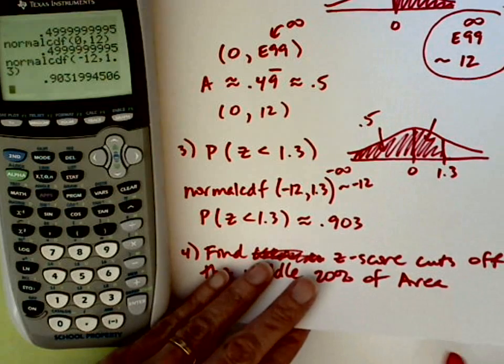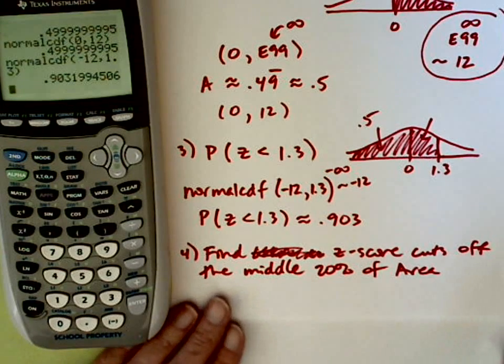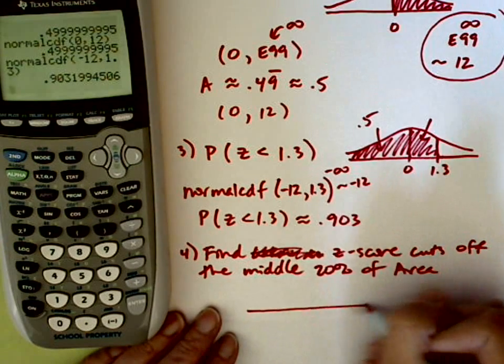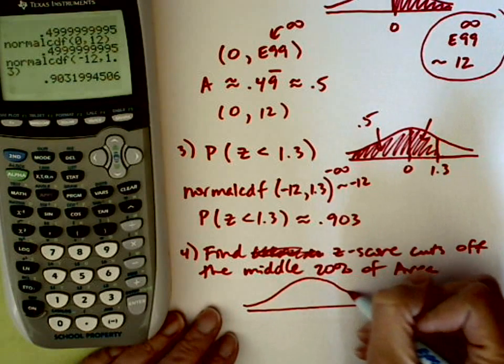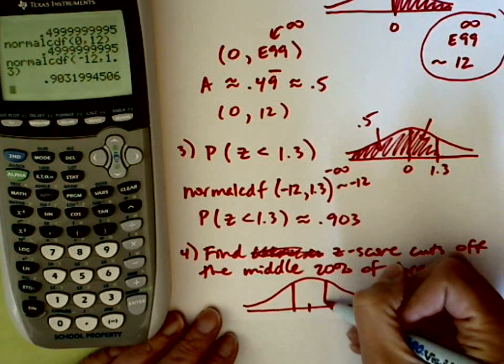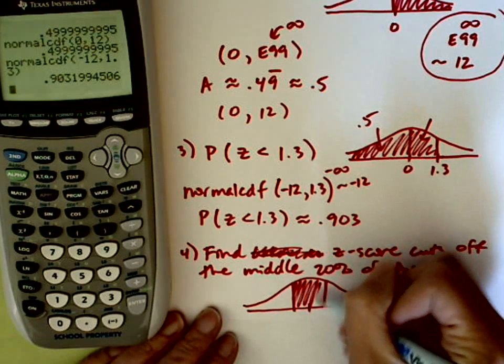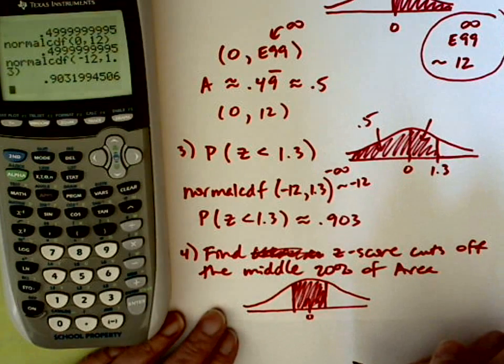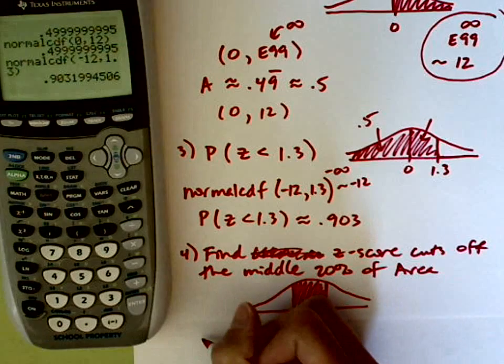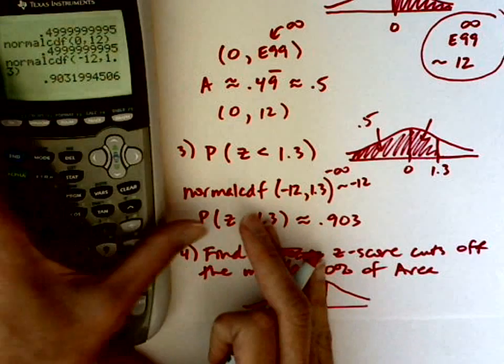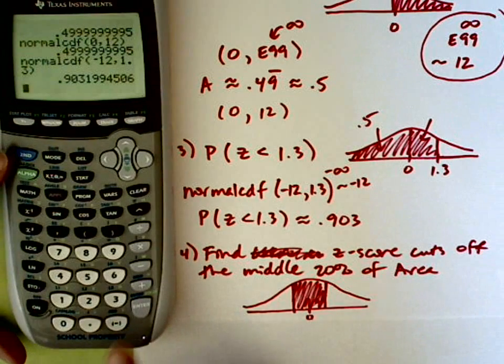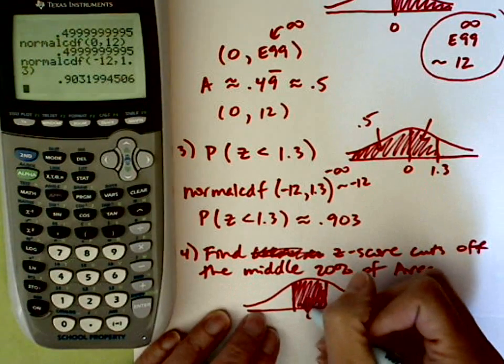Actually, we're going to be looking for two z-scores since we're going to be cutting off the middle 20% of the area under the normal curve. I'm going to use a little more paper here so I can draw you a picture. I'm going to go ahead and draw you a picture. A normal curve again. We're looking for the middle 20%. Remember, 0 is there. So the middle 20% might look something like this. But I'm centered over a z-score of 0. So I'm looking for these two z-scores.